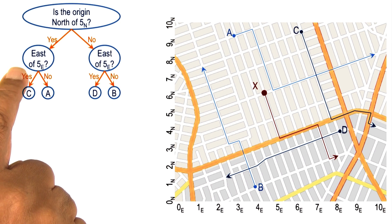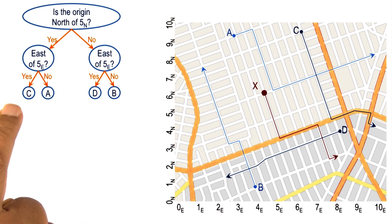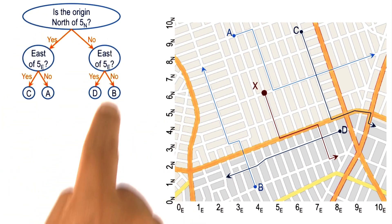At this node, I might ask, is the origin east of 5 of e? If yes, it brings us to this branch. If no, it brings us to that branch. And this way, we have been able to discriminate between c and a. In fact, we have been able to discriminate between c and all of the cases. Similarly for this part of the branch.